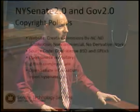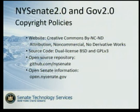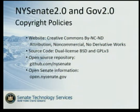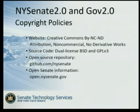Regarding copyright policies: Senate attorneys looked at this when we said we want to start publishing our source code under GPL v3 or the BSD Berkeley license. There were a few hurdles to overcome, but it happened very quickly, which is why we're now able to publish all of our code except for the financial system. We're using a Creative Commons license on the website — BY-NC-ND: attribution, non-commercial, no derivative works.